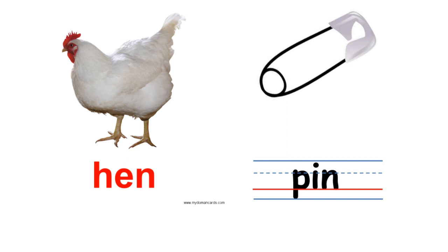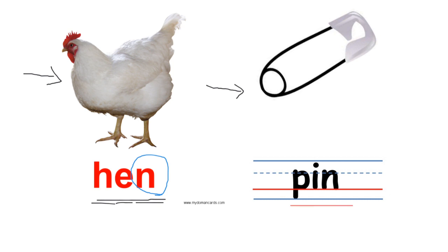Now, let's take a look at these picture words that have the N sound at the end. This is a hen. Look at the word hen. H-E-N. Hen. Did you hear the N at the end? Okay, now take a look at this picture. Let's read the word pin. P-E-N. Pin. Do you hear the N at the end? Hen. Pin.